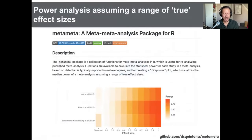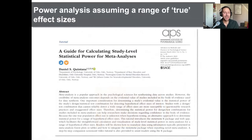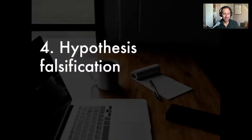When creating firepower plots or looking at statistical power of studies included in a meta-analysis, you can also use the meta-meta package available on GitHub. There is also a paper associated with this that walks you through how to do that as well.